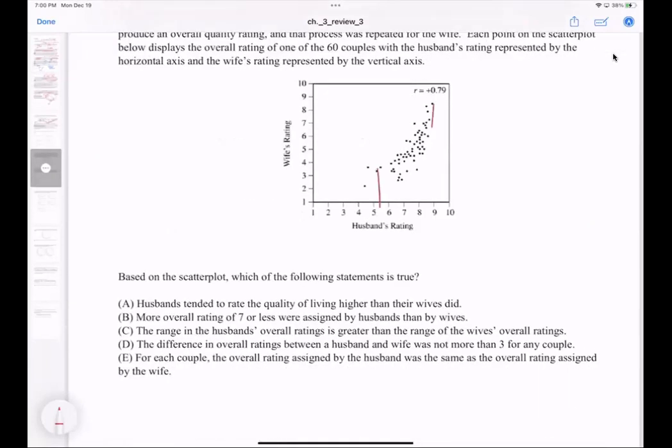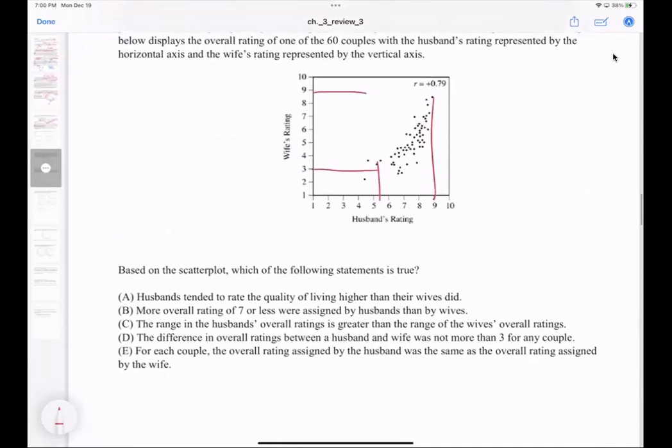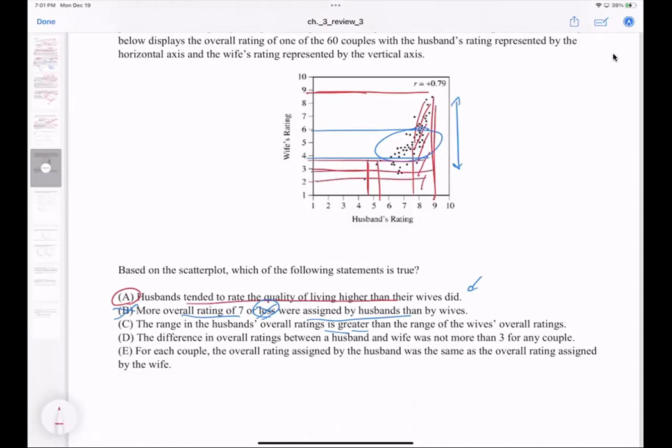Number eight: look at husband's rating comparison to wife's rating. We have to go through each one. Husbands tend to rate the quality of living higher than their wives did - that's absolutely true because you can see vast majority have between eight and nine, whereas for wives' rating it varies a lot. There's not much concentration, perhaps maybe between six and four. Husbands definitely rated higher than their wives overall. More overall ratings of seven or less were assigned by husband - rating of seven or more, not less. The range of husbands' overall rating is greater - the range exists from nine to maybe four or five for husbands. For wives it's nine to maybe two, so definitely for wives it's greater, not husbands.